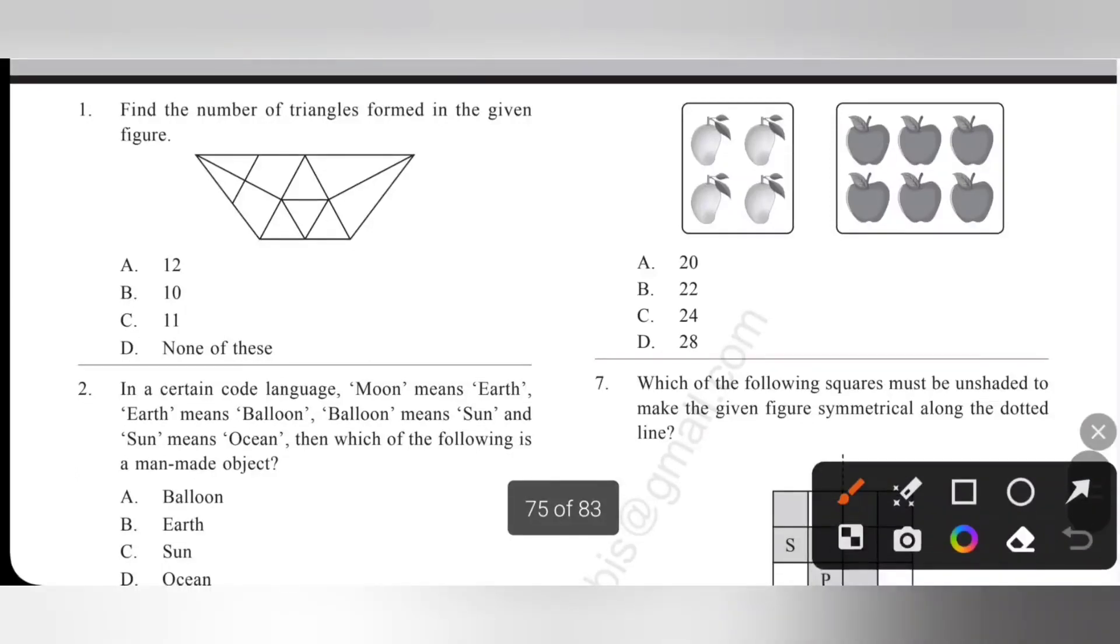First one, logical reasoning. Find the number of triangles formed in the given figure. Please pause the video and try to find the number of triangles. Actually I got 15 triangles, that is none of these. Option D is the correct answer.